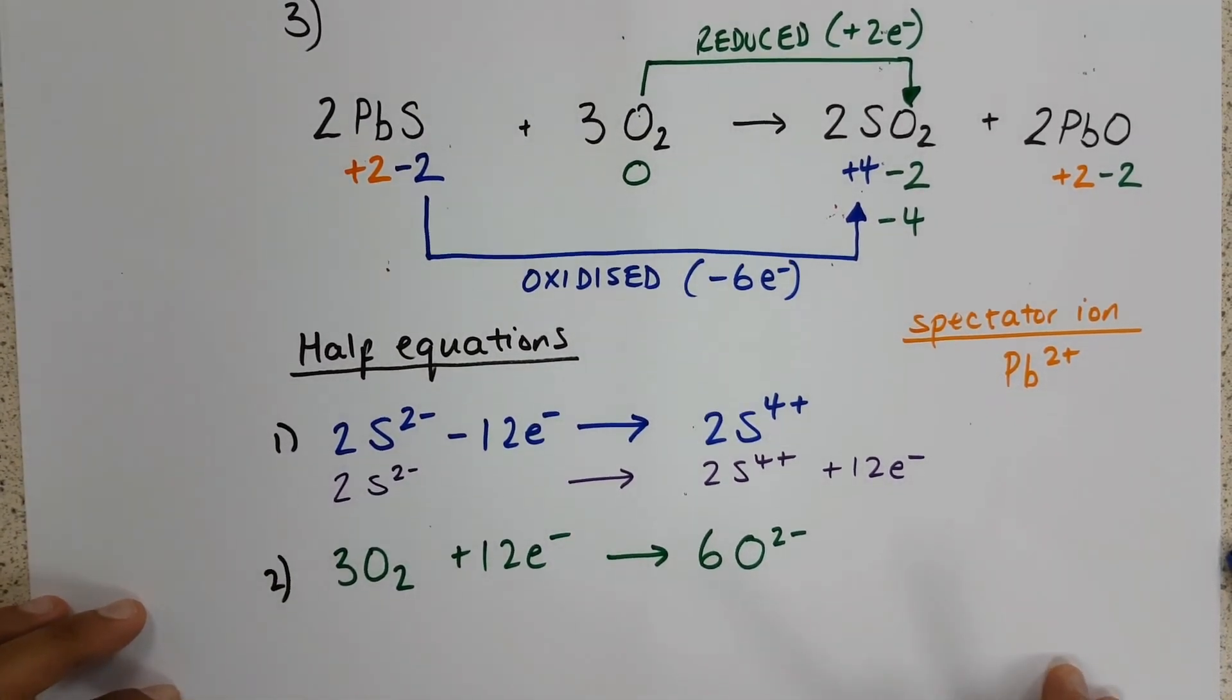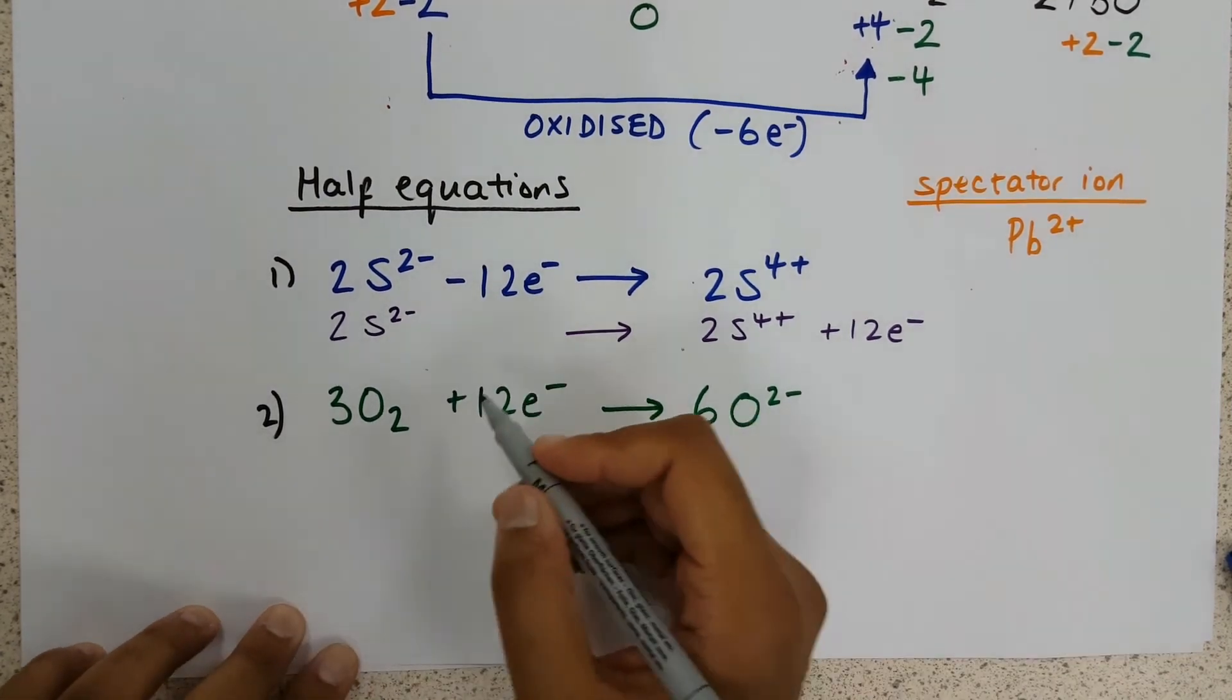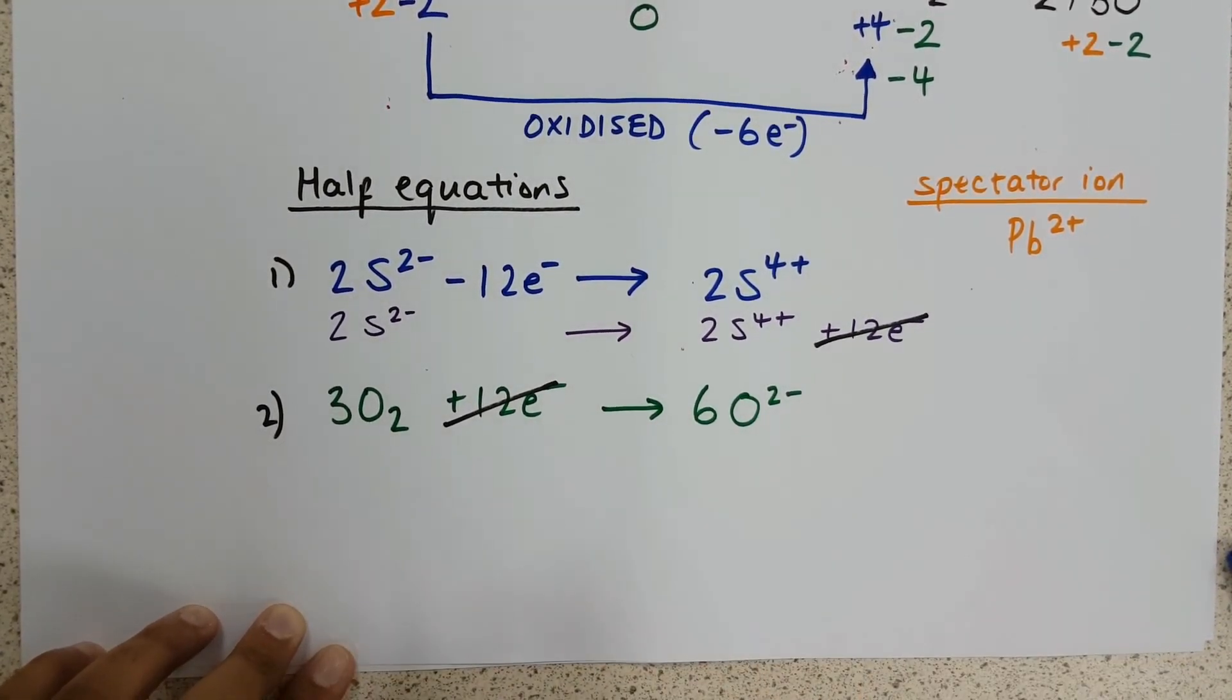And the last step is the combining of the two. So when we combine these, again, we can cancel out the electrons, and I'm going to focus on these two.